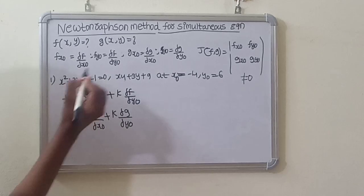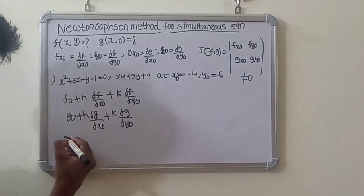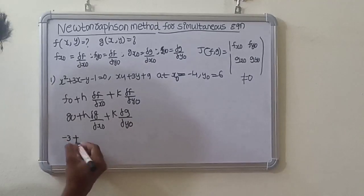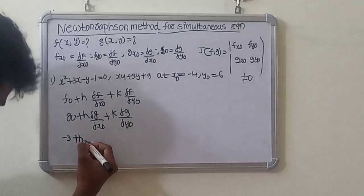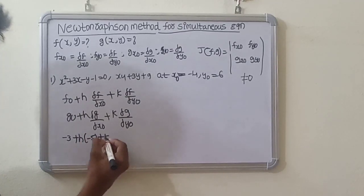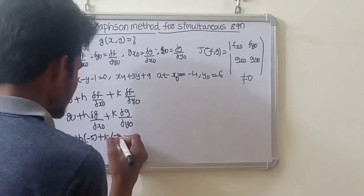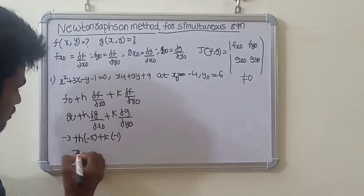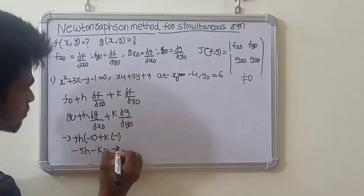Substituting values: f0 equals minus 3, rho f by rho x0 equals minus 5, and rho f by rho y0 equals minus 1. So the first equation becomes: minus 5h minus k equals minus 3. This is equation 4.